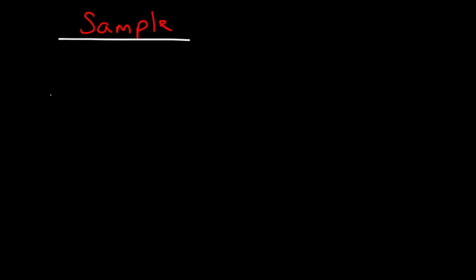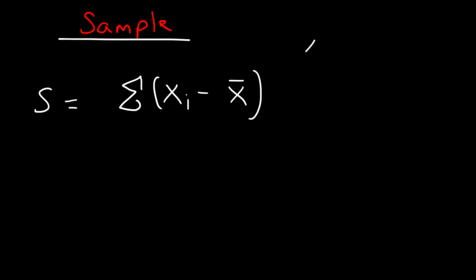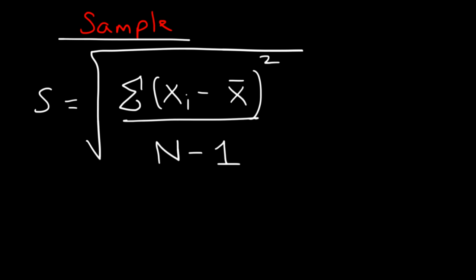The next formula is the sample standard deviation. If you have just a sample of a population — not the entire population — then you want to use this formula. S, which is the standard deviation, is equal to the sum of all of the differences between every point and the sample mean, which is basically the average of all the data points in the set. You have to square it, but it's divided by n minus 1, as opposed to n. That's how you calculate the standard deviation of a sample.